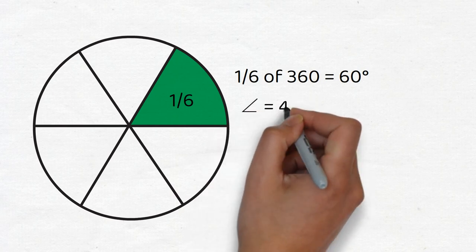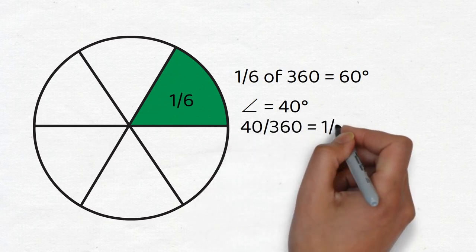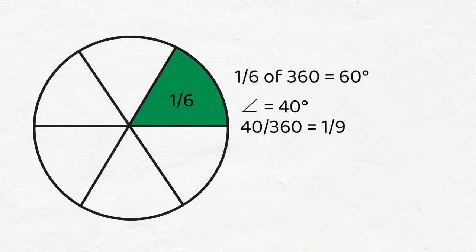If an angle has a measurement of 40 degrees, it means the pizza slice formed by the angle will be 40 out of 360, which is one-ninth of the full circle.